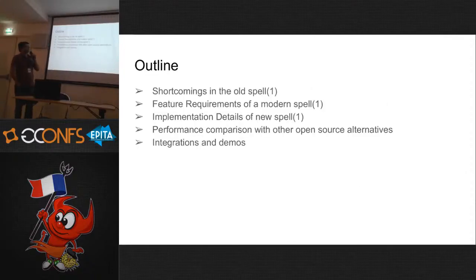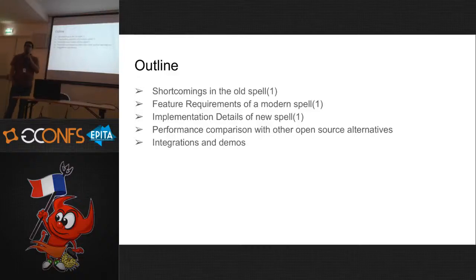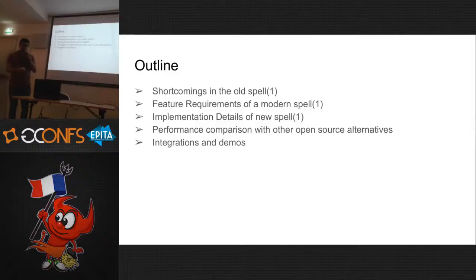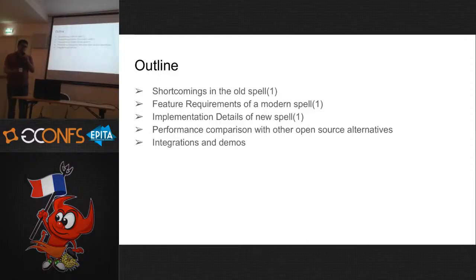These are the five major topics I would like to cover today. I'll briefly talk about the shortcomings in the current spell implementation in the BSDs — I'll call this the old spell implementation, and what I've been working on I'll call the new implementation. Based on those shortcomings, I've come up with a set of features a modern spell implementation should have. I'll talk about implementation details, compare performance against major spell implementations, and show a small demo of integration with other shell utilities.